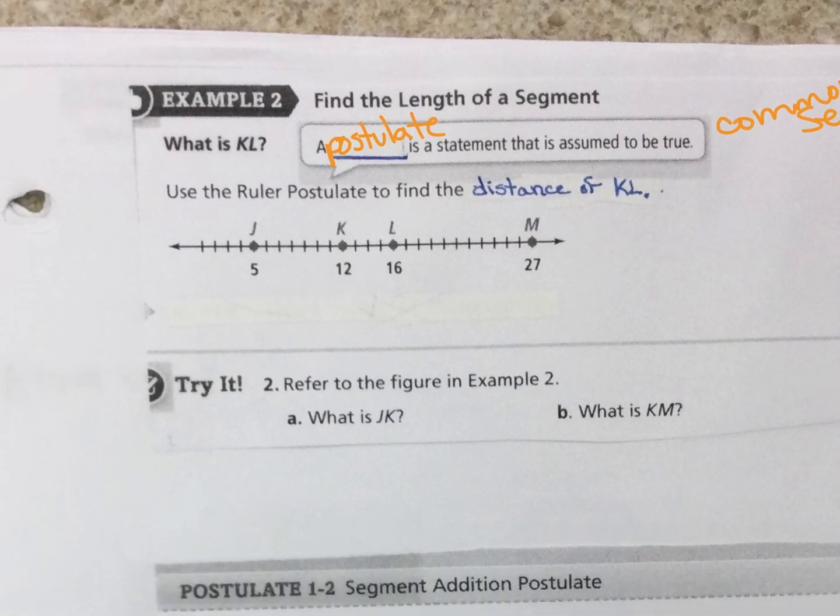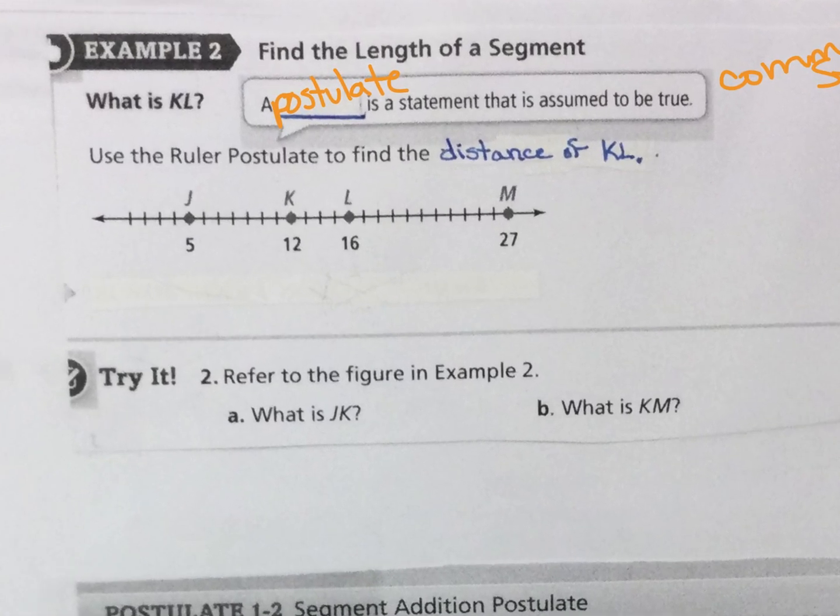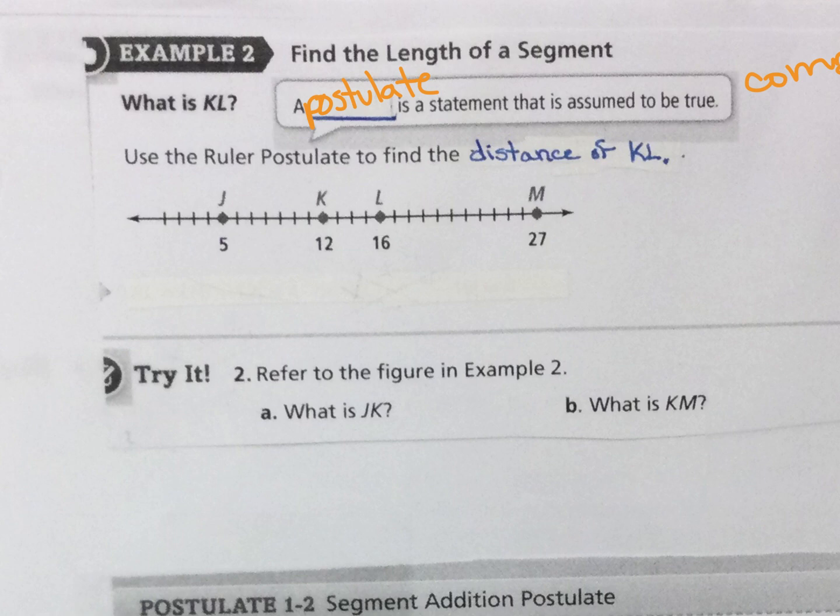And you'll see what I mean by that in a second. Use a ruler postulate to find the distance of KL. Well KL is from here, one, two, three, four, right? And then what is JK? Well, one, two, three, four, five, six, seven.